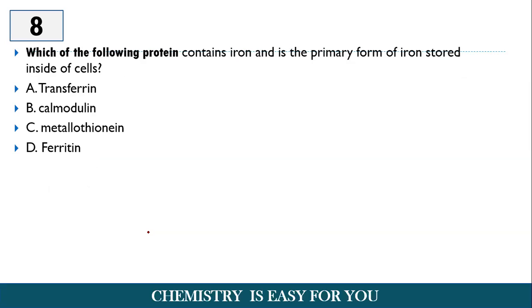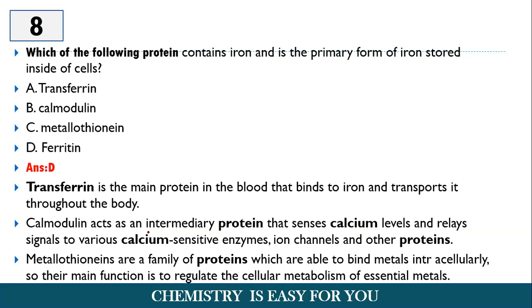The eighth question, which of the following protein contains iron and is the primary form of iron stored inside of the cell? So transferrin, calmodulin, metallothionein, and ferritin are the options. Option D, ferritin is the correct answer. So ferritin is the protein which contains iron and in the form of ferritin, iron is stored inside the cell.